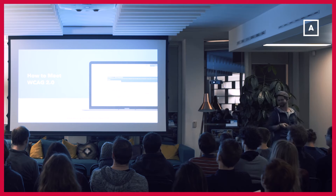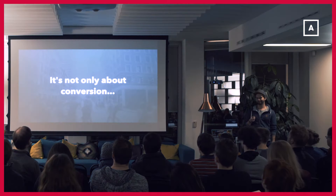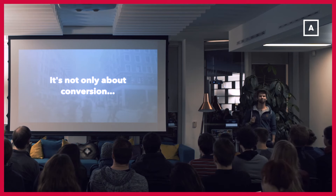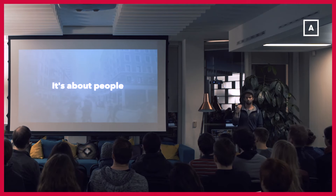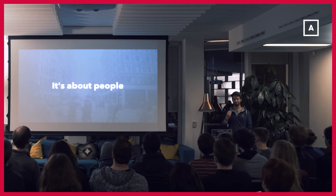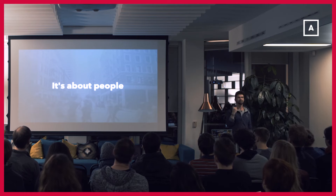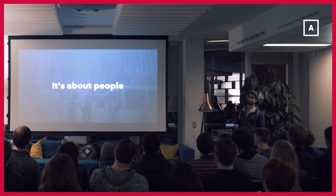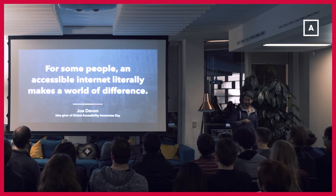You might ask how to meet these standards — there's a not-so-visually-appealing document, but it's actually pretty good. At the end we have to remind ourselves that it's not only about conversion. It's about being affordable, being inclusive, and being accessible — because at the end it's about people. I want to build the best product possible and have it used by as many people as possible. Always remind yourself: depending on the product you build, for some people an accessible internet literally makes a world of difference.